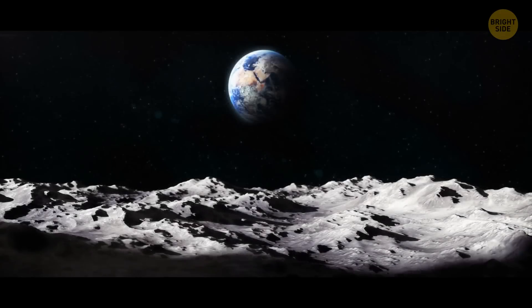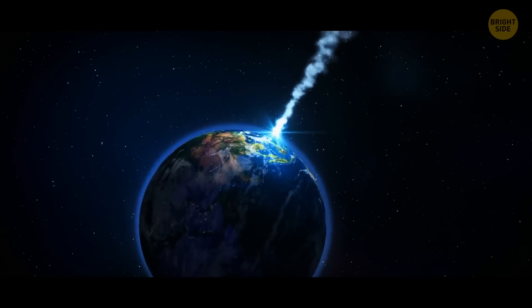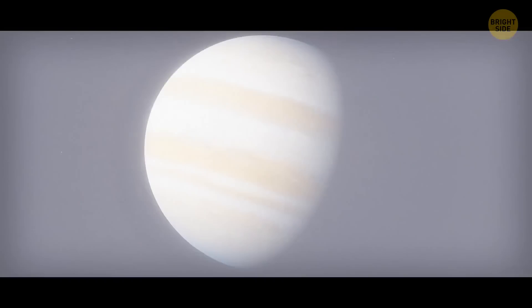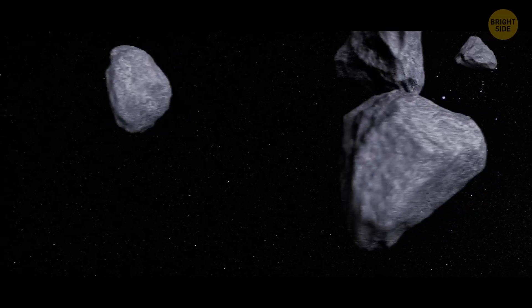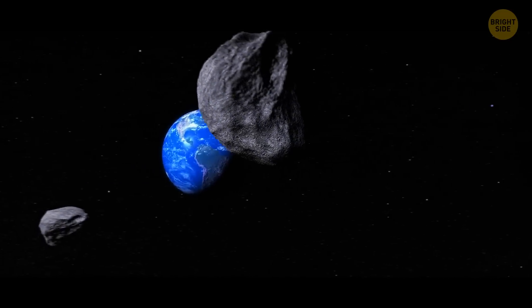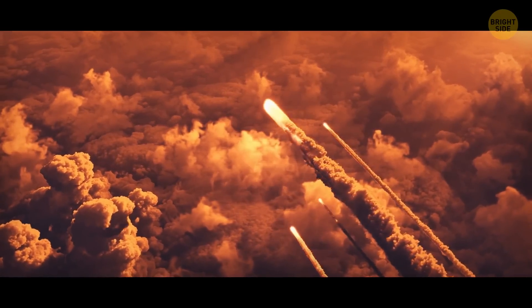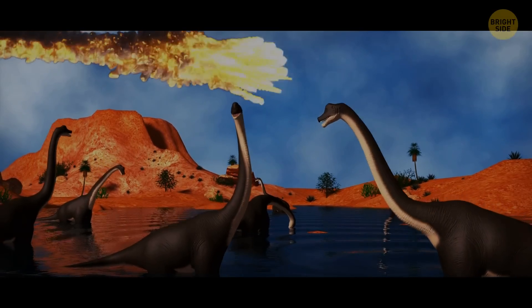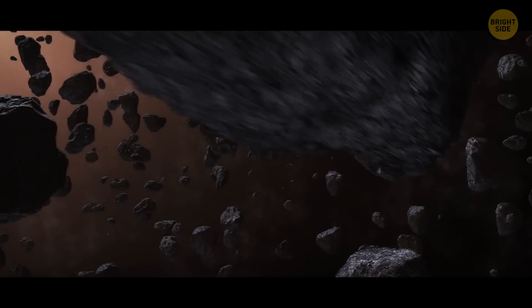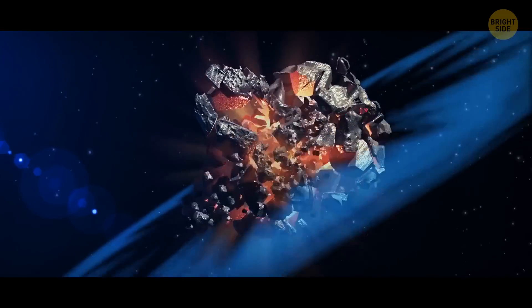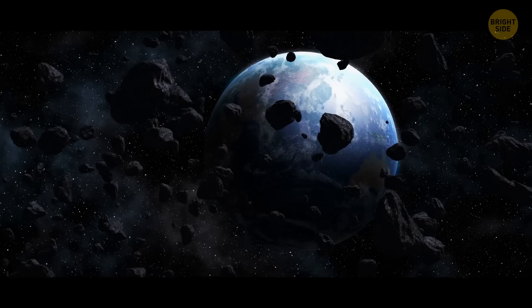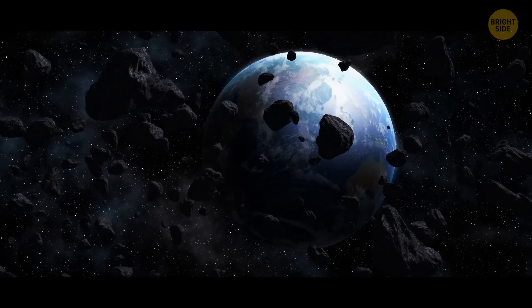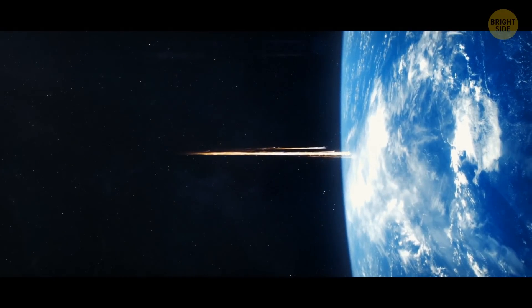Remember that massive asteroid that hit the Earth around 66 million years ago? Well, without Jupiter and its asteroid belt, our planet would be constantly hit by meteorites and asteroids. And some of them would be just as big as the one that caused all that sorrow to the dinosaurs. These rocky fellas would be roaming around in space with no one and nothing to stop them. And if Earth was the only planet out there, it would also be their only target.